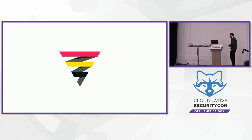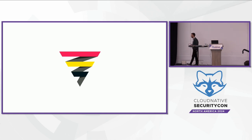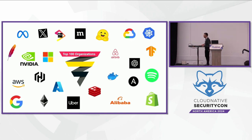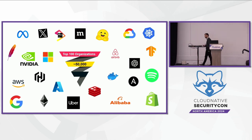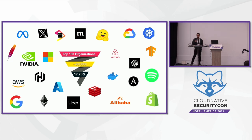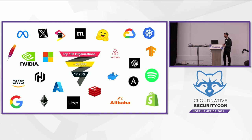We decided to check how realistic these strategies are by analyzing the top 100 organizations on GitHub, which together contain more than 50,000 different repositories. We checked how many secrets would be missed if an organization only used git clone. We found that around 18% of potential secrets will be missed if organizations do not use the git clone --mirror command.